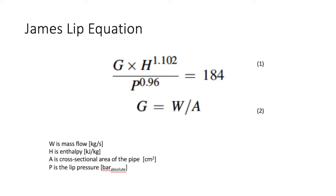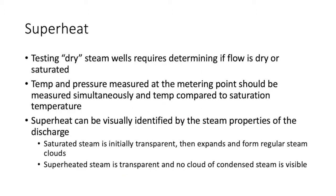The James equation (equation 2) calculates the flow rate G by dividing the mass flow by the cross-sectional area of the pipe. Enthalpy can then be calculated once the flow rate and lip pressure are known using equation 1. Testing dry steam wells requires determining if the flow is dry or saturated. Temperature and pressure measured at the metering point should be measured simultaneously and compared to the saturation temperature. Superheated steam is transparent with no visible cloud at the wellhead, while saturated steam is initially transparent and then expands into regular steam clouds.